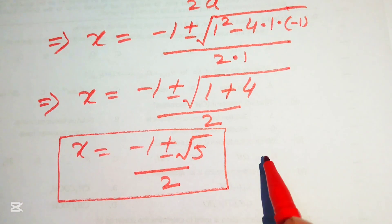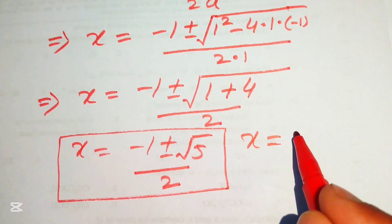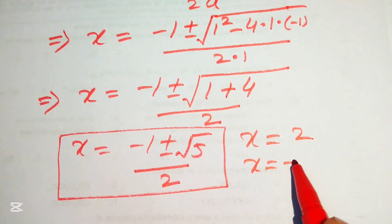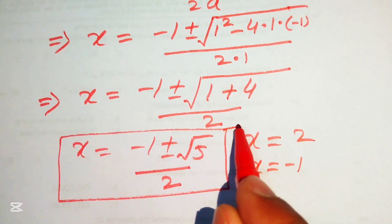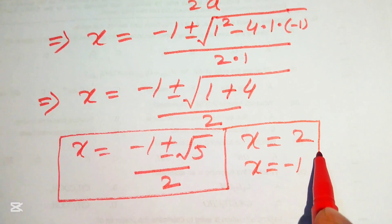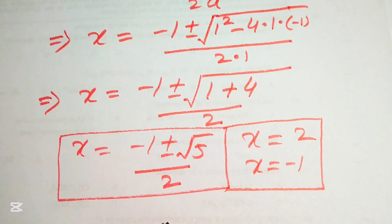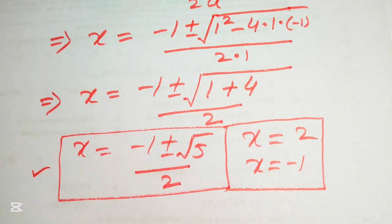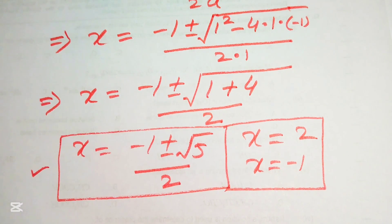So the four roots of the given equation are x = 2, x = -1, x = (-1 + √5)/2, and x = (-1 - √5)/2. These are the total four roots and this is the final answer. Thank you for watching, please subscribe for more videos.